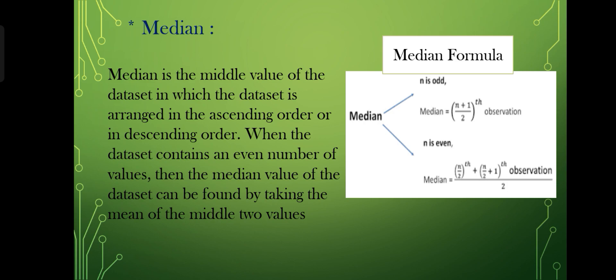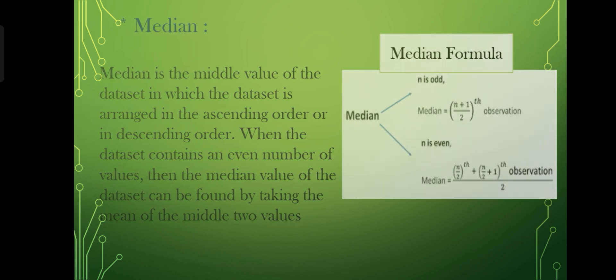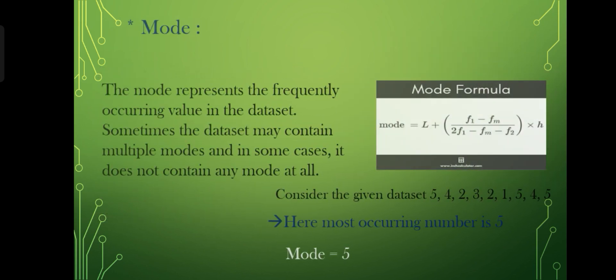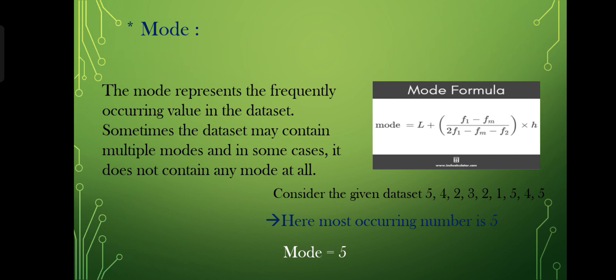There are two formulas for median. Median for odd number: (n+1)/2 observation, and for even number: [(n/2) + (n/2 + 1)]/2 observation.